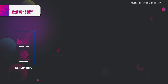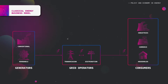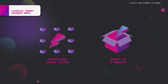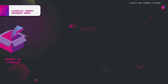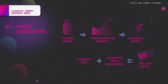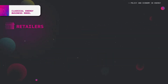Traditionally, the dominant business model in the industry has the sole purpose to generate electricity at central power plants and then distribute it to end consumers through transmission and distribution networks. In this relatively centralized production and distribution system, energy is treated as a product. The value creation of a centralized power plant is to transform primary energy into secondary energy. The selling price has to cover not only the primary energy purchase price but also operational costs, financial investments, and generate benefits. The retailer's role consists of purchasing energy from producers in the energy market and then selling it to end users.